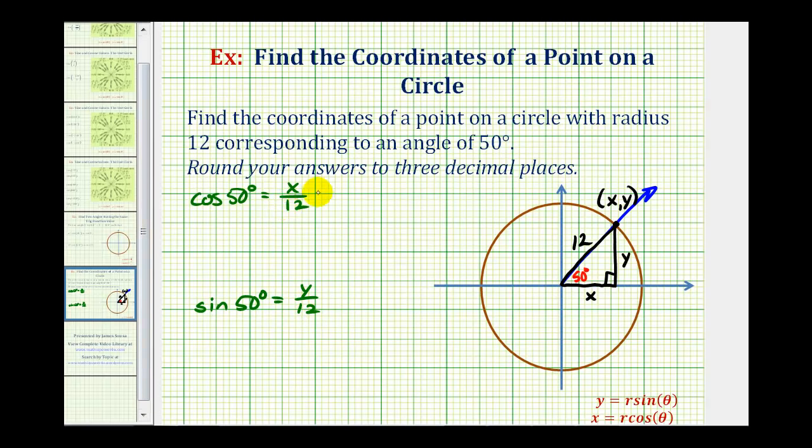Now if we solve this equation for x by multiplying both sides by 12, I'm going to go ahead and change the order here. I'm going to write this as x equals 12 times cosine 50 degrees. And the same thing for the second equation, we multiply both sides by 12, and then change the order of the equation, we would have y equals 12 times sine 50 degrees.